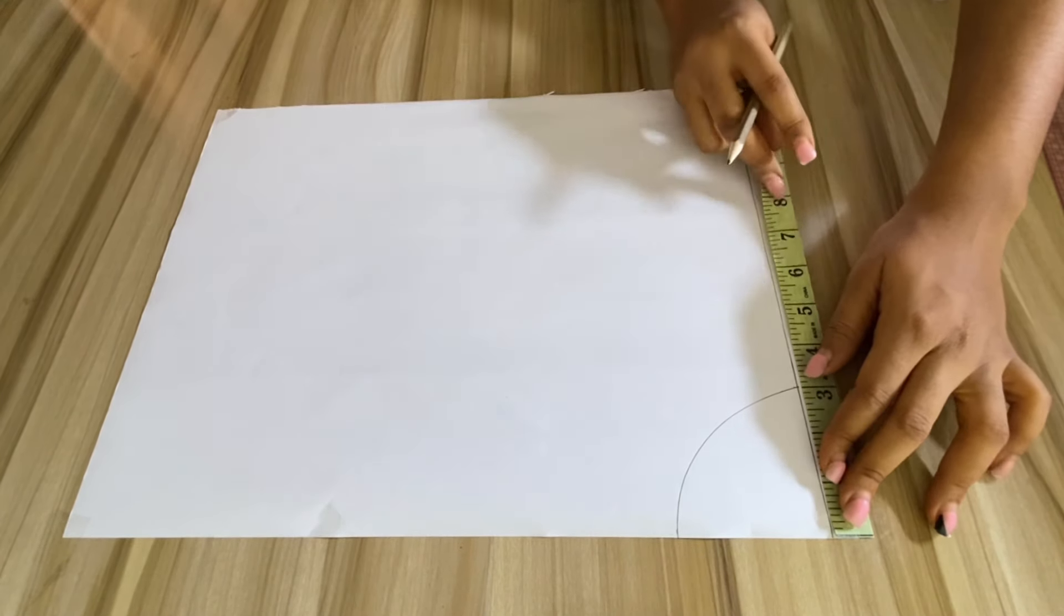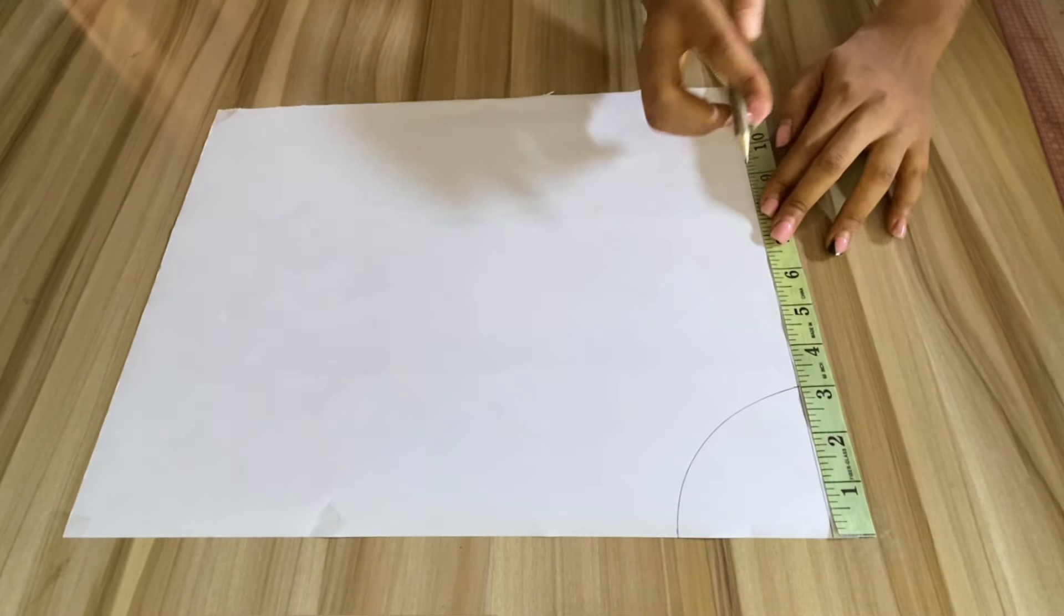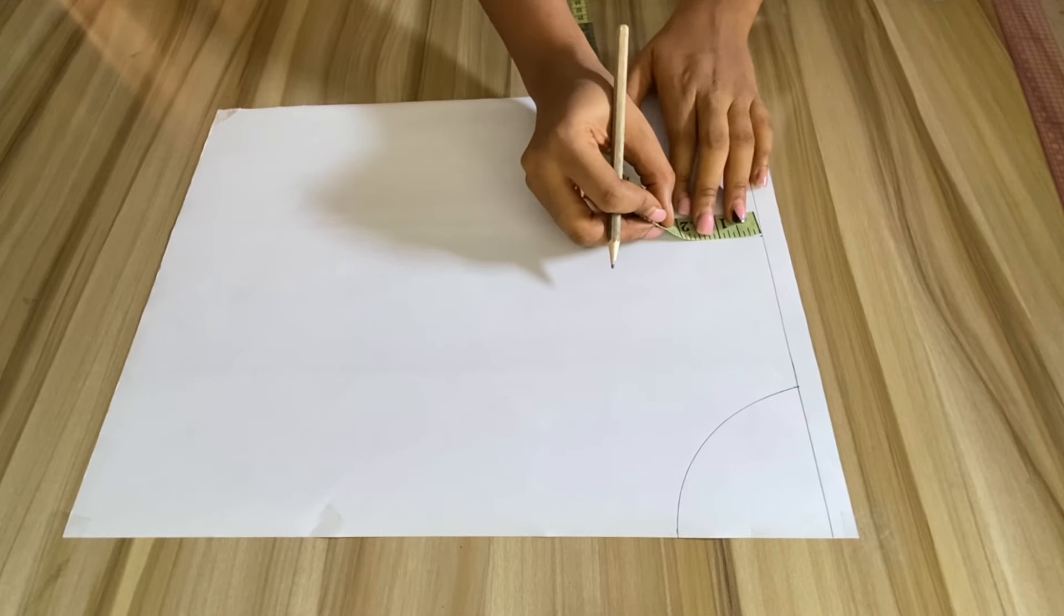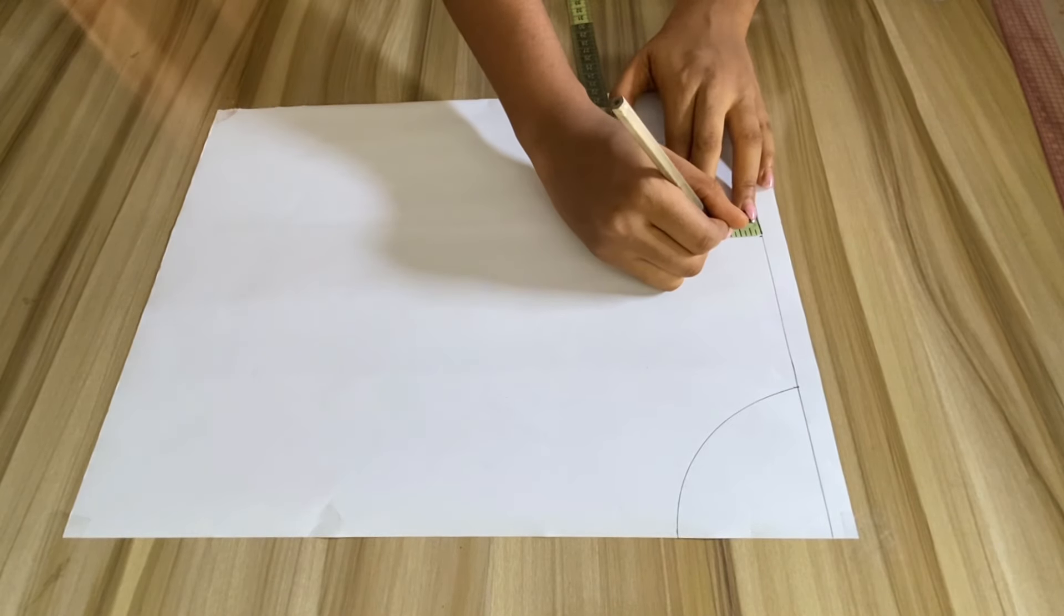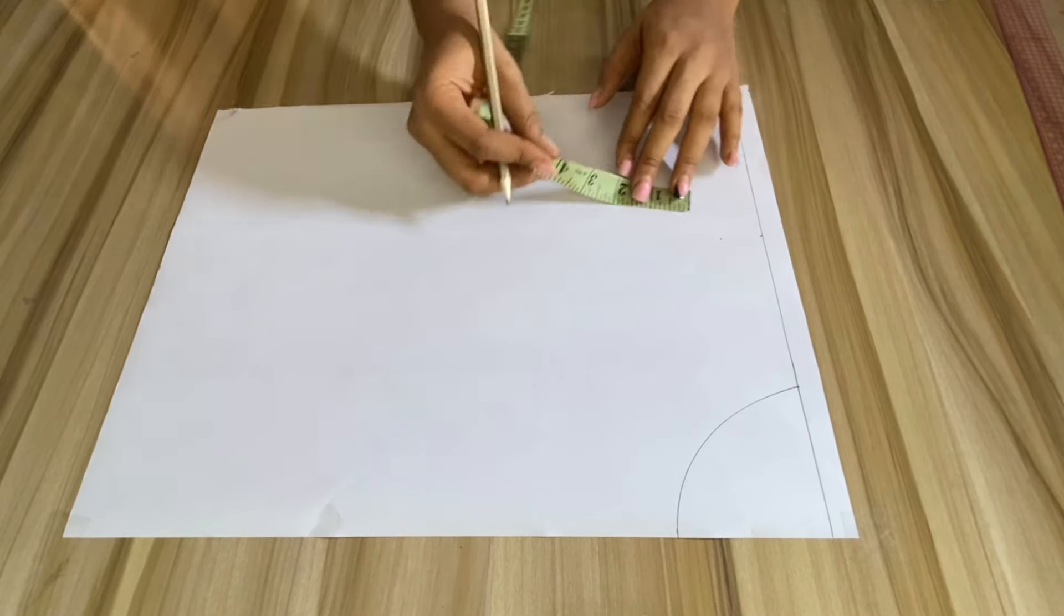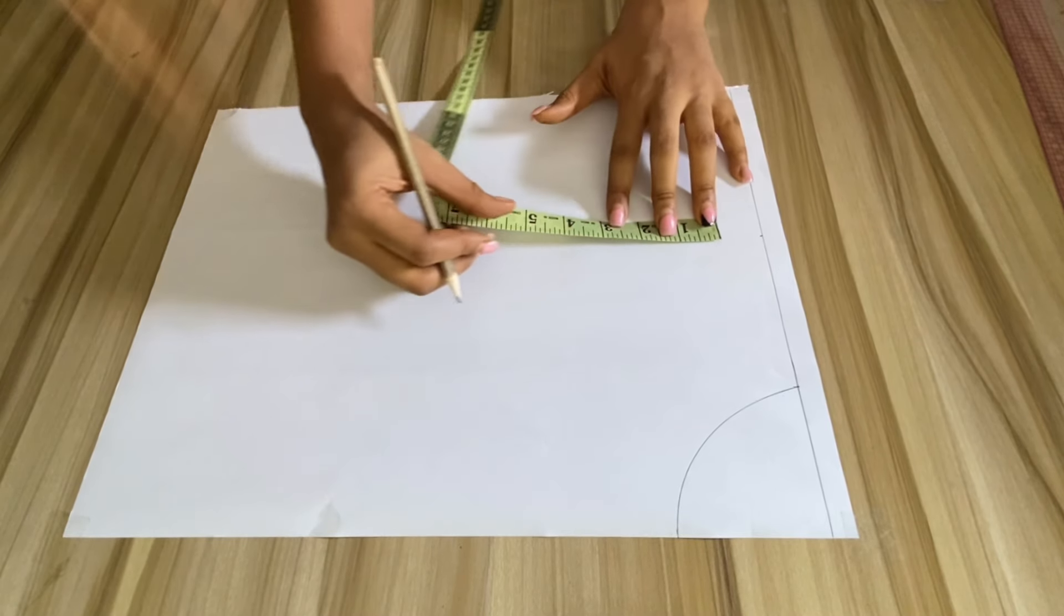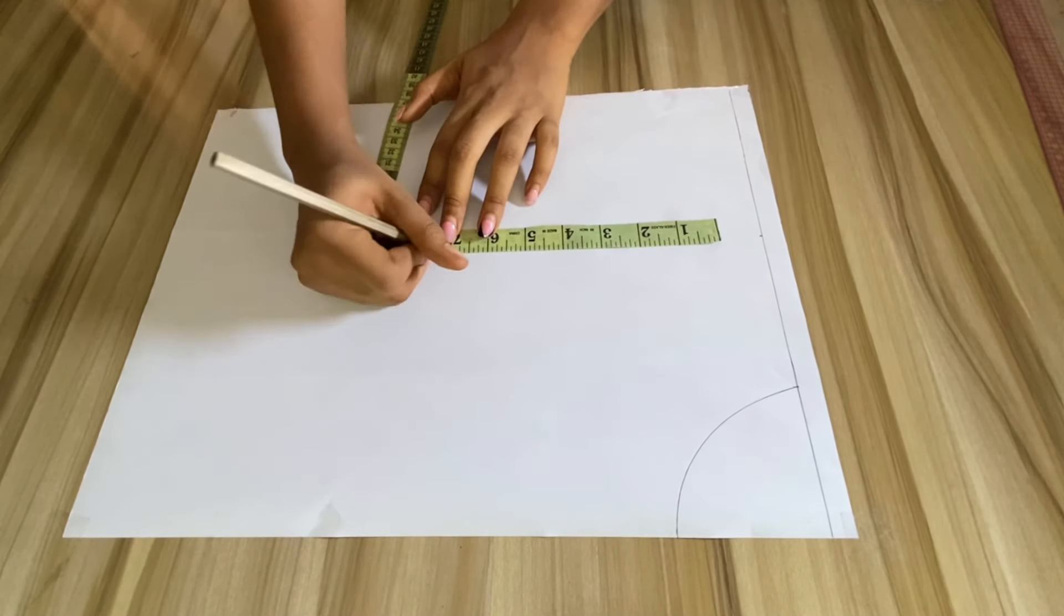After that is done, I will be taking the shoulder measurement, which is seven inches. I'll be going down by one inch for the shoulder slope, and I'll also be taking the measurement of my armhole, which is seven inches, and I'll connect the points together.